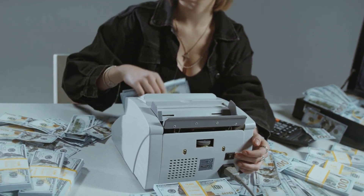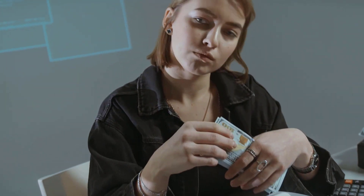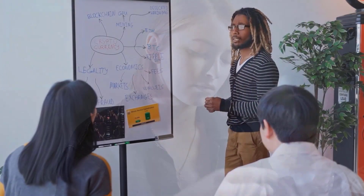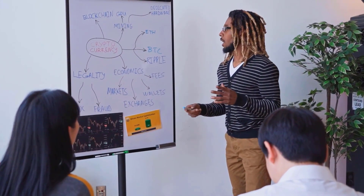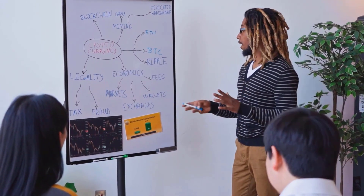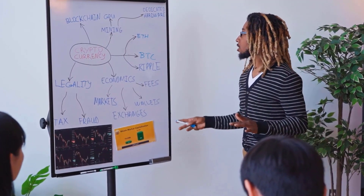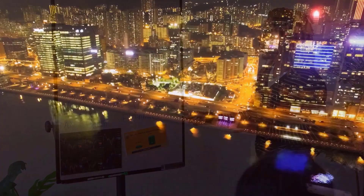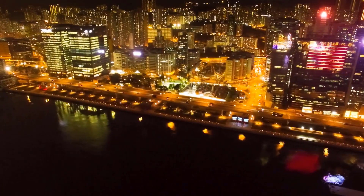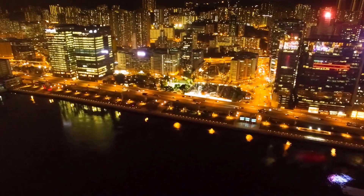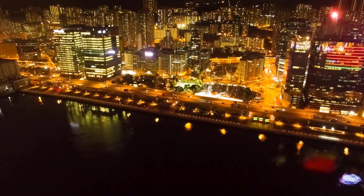ALGO to USD expectations for November 2023: initially cost at $0.07, most extreme cost $0.07, least cost $0.06. The normal for the month $0.07, Algorand cost estimate toward the month's end $0.06, change for November -14.3%.